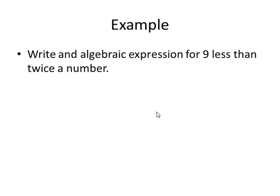Okay, let's try an example. Write an algebraic expression for 9 less than twice a number. Again, when I see 9 less than, that's telling me minus 9. 9 less than what? Twice a number. Well, if we let the number be represented by the variable x, twice a number would be 2x. So, this expression translates to be 2x minus 9.